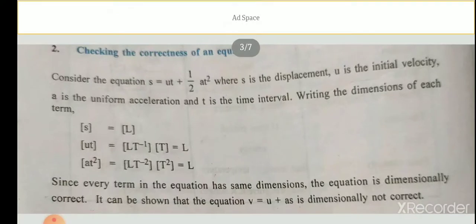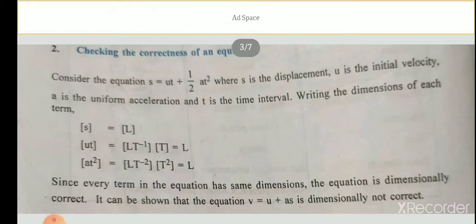Now students, in a similar way, you have to check the equation v = u + as, where v is the final velocity, u is the initial velocity, a is the acceleration, and s is the displacement. Try to check whether this equation is dimensionally correct or not.